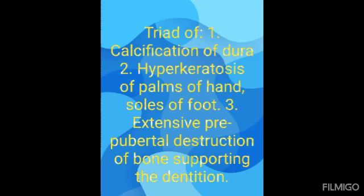It has three conditions: first is calcification of the dura, second is hyperkeratosis of palms of the hands and soles of the feet, and third is extensive prepubertal destruction of the bone supporting the dentition.